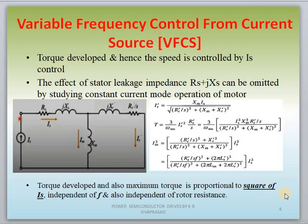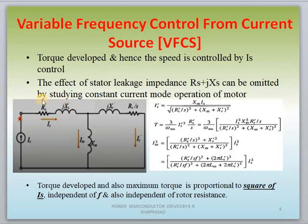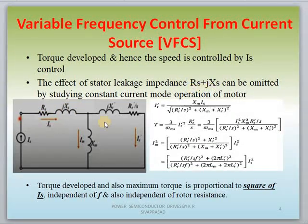This is the CSI Fed Induction Motor Control Drive, that is variable frequency control from current source. Here, observing the equivalent circuit of the induction motor, it is operating with a constant current source IS value. The current source is connected in series with the stator impedance value RS plus JXS. We can neglect the impedance value here because there is no effect due to this impedance value.